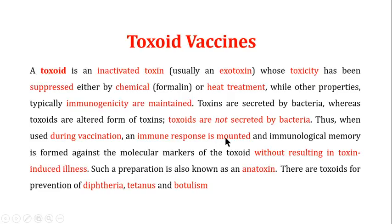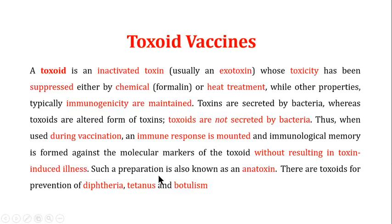During vaccination with a toxoid, an immune response is mounted against the toxin because the immunogenicity remains intact even though toxicity is suppressed. Immunological memory is formed against the molecular markers of the toxoid, without causing toxin-induced illness. Such preparations are also known as anatoxins. Toxoid vaccines are available for diphtheria, tetanus, and botulism.